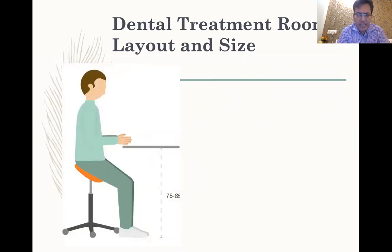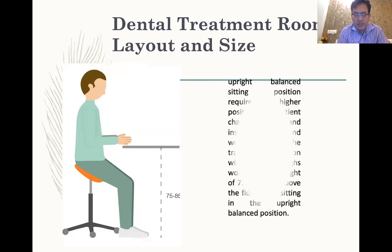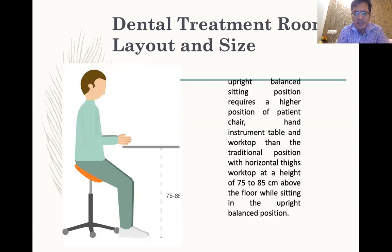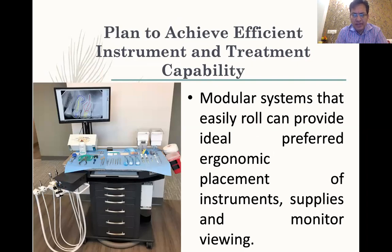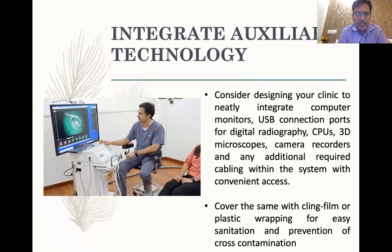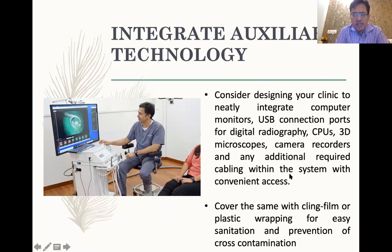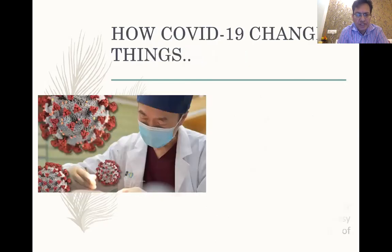Operating stool heights of 75 to 85 centimeters are needed so that our spine stays straight at the operating table. Modular systems that easily roll can provide ideal ergonomic placement of instruments, supplies, and monitor viewing. In today's era, digitization is key — digital scanners, T-scans, digital equipment, CPUs, 3D microscopes, computer recorders, and additional cabling all require a compact area, which must be protected with cling film for every patient to maintain sanitization and prevent cross-infection.